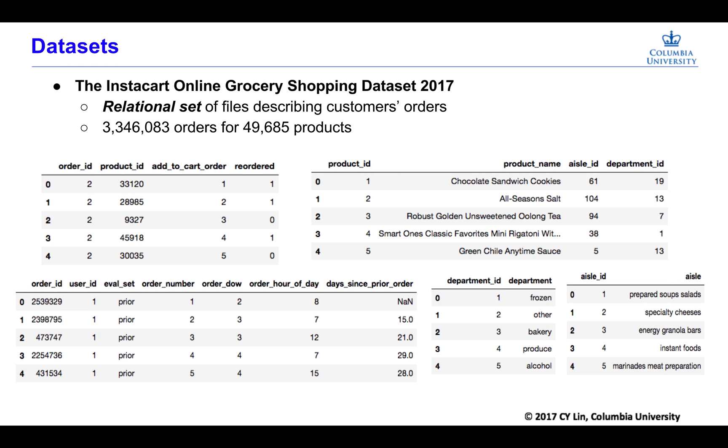The dataset we use is the Instacart Online Grocery Shopping dataset 2017. It's a relational set of files describing customer orders. It's about 3 million orders for 50,000 products. Basically, we have 5 data sheets and we need to combine them in some ways to create some important features for later usage.